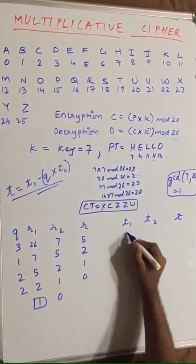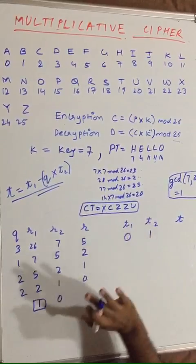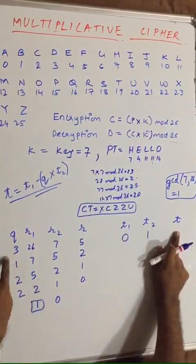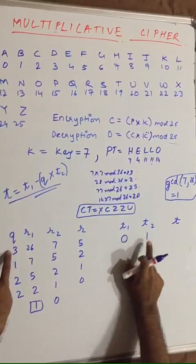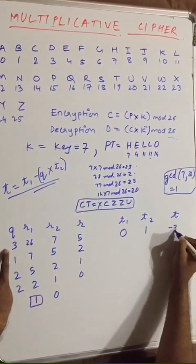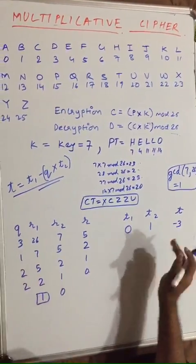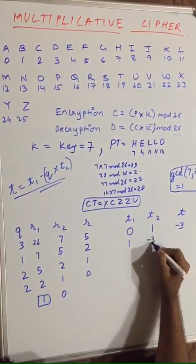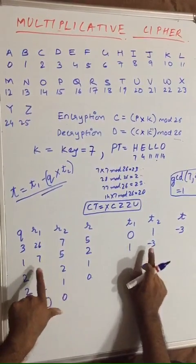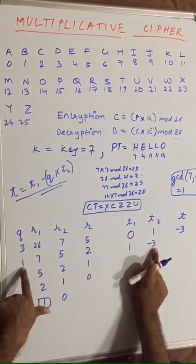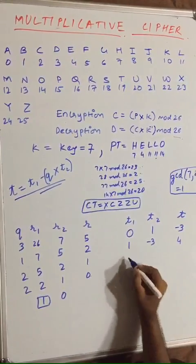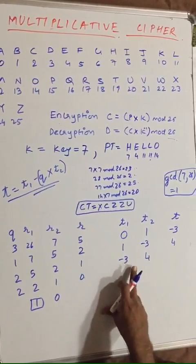To solve for T, we start with T1=0 and T2=1. Using T = T1 − Q × T2: for the first row, T = 0 − 1×3 = −3. Shift: T1=1, T2=−3. Next row: T = 1 − 1×(−3) = 1 + 3 = 4.